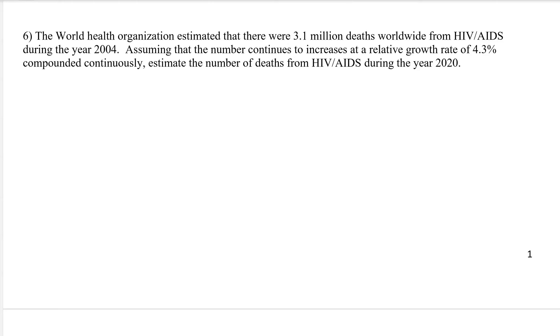Here's another one. It says the World Health Organization estimated that there were 3.1 million deaths worldwide from AIDS during the year 2004. Assuming that the number continues to increase at a relative growth rate of 4.3 percent compounded continuously, or continuous growth rate. Estimate the number of deaths during the year 2020. So this is a little depressing of a problem, but same thing. We have A of t. You can get these numbers. So there's 3.1 million e, and then we have a growth rate. So again, over 2, 0.043t.